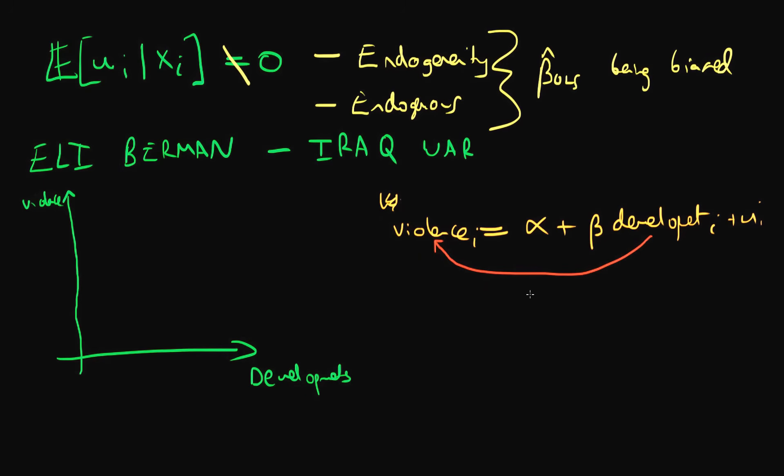What would happen if you actually estimated this regression just as it stands? Well, in fact you would probably get a positive relationship between the levels of violence and development spending. Does that mean that development spending actually leads to high levels of violence? Well, on first glance that's what it appears.